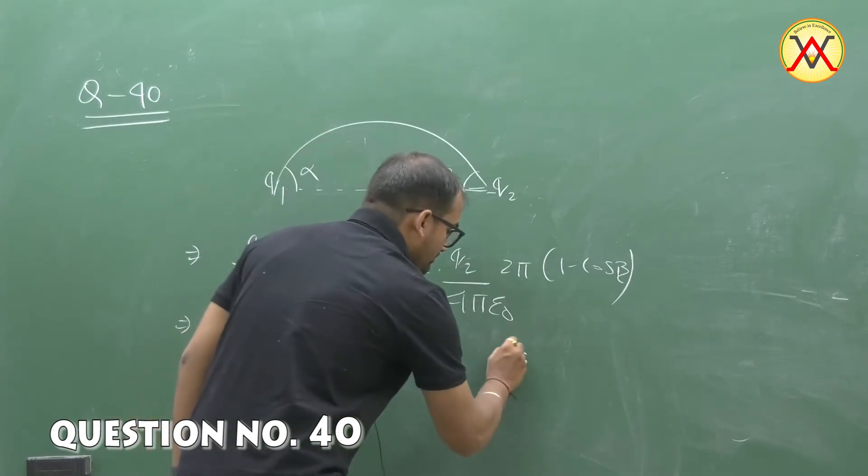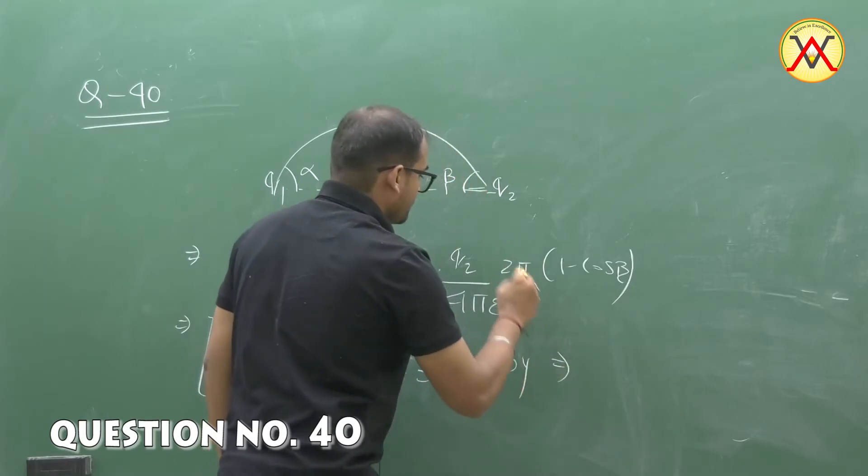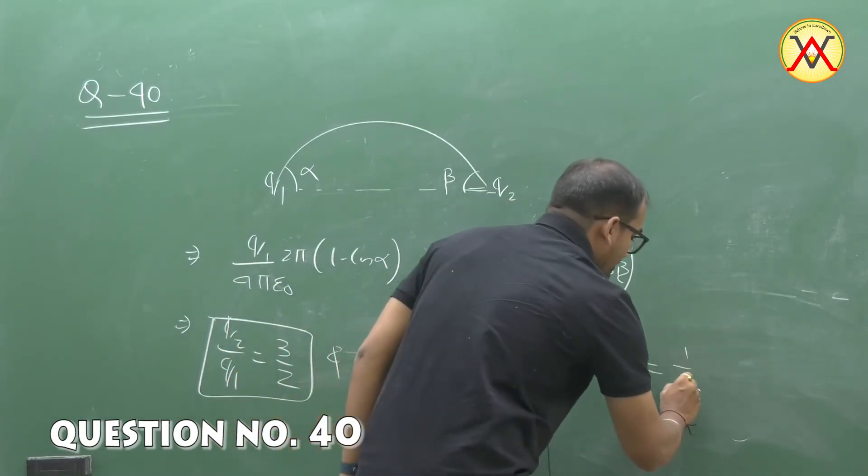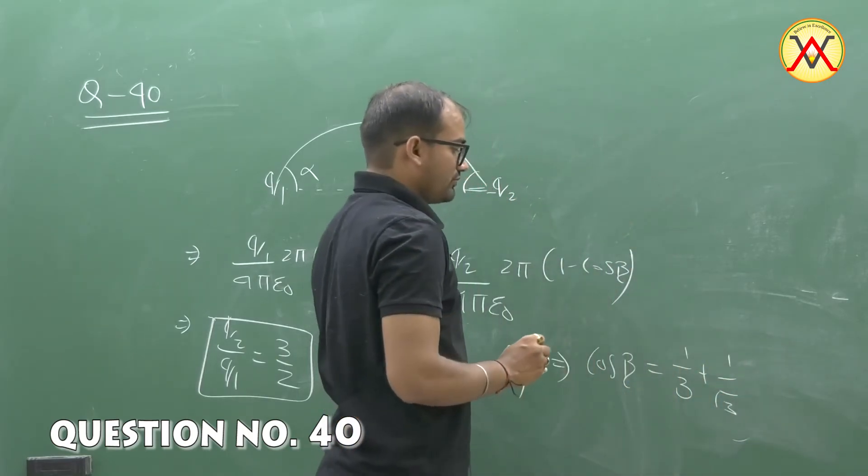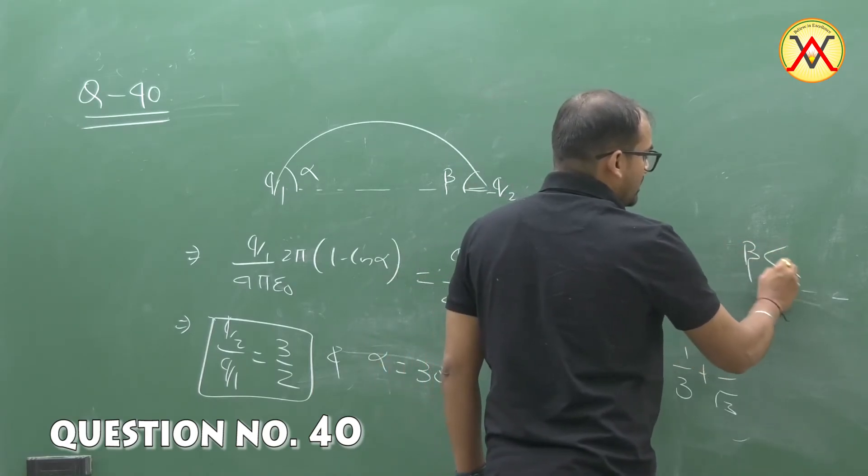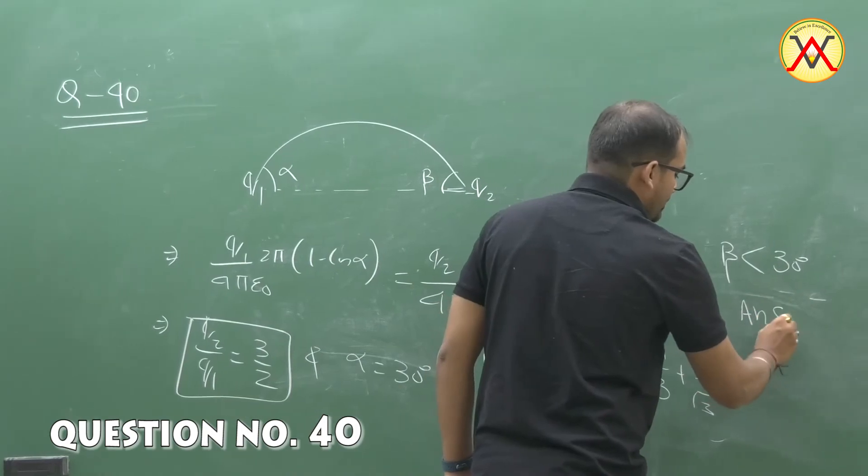By solving the above equation we get cos beta equals to 1 by 3 plus 1 by root 3 which explains that beta should be less than 30 degree. That means answer should be A.